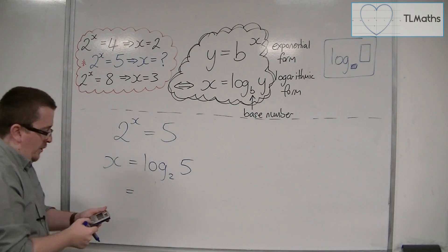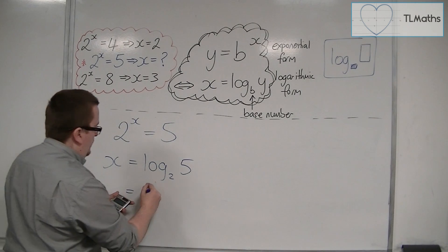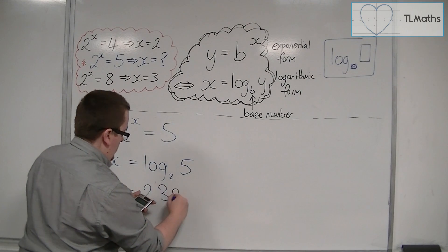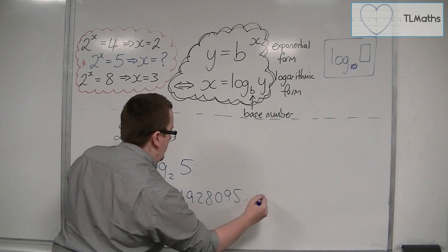So log base 2 of 5 is equal to 2.321928095, and that keeps on going.